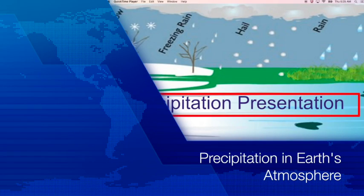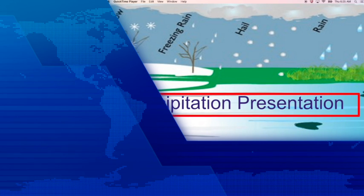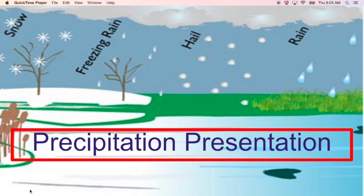Welcome to the precipitation presentation. We're going to be talking about precipitation in the Earth's atmosphere. An essential statement: precipitation falls in regions where moist air tends to rise, producing precipitation.